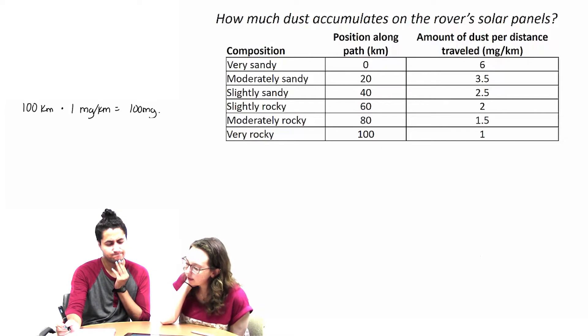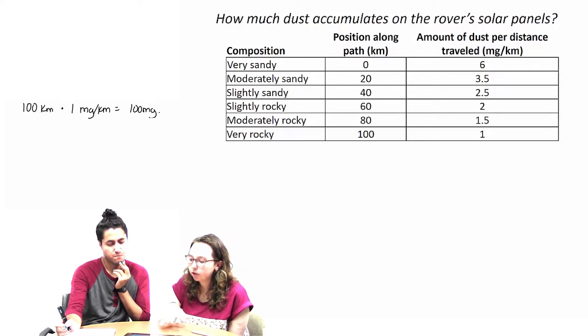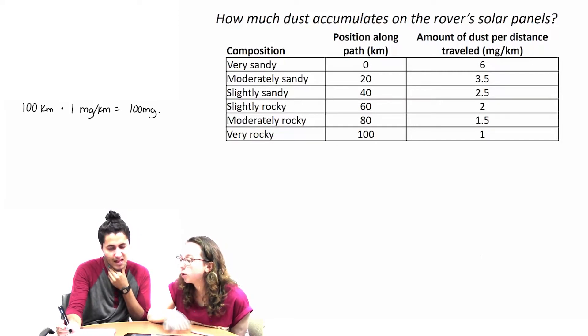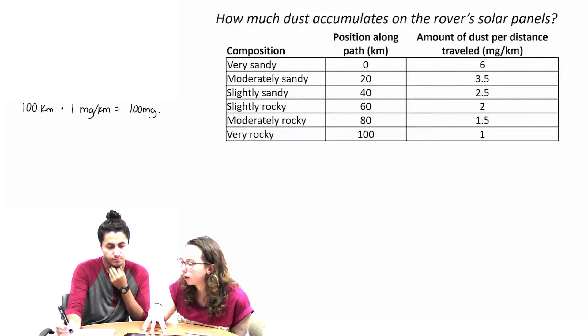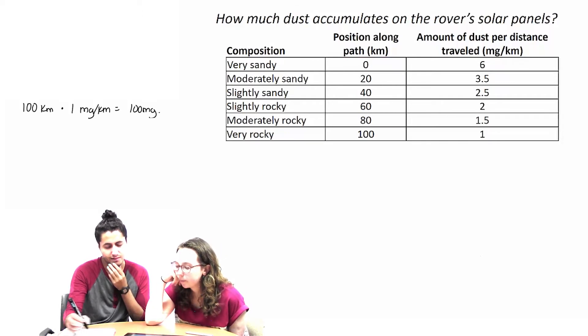I see what you're saying, but I think the issue with that is we're ignoring that the amount of dust per distance traveled changes. I think what you're saying is that it's always one milligram per kilometer the whole 100 kilometers. But this shows that at the different positions, it is changing. I see.